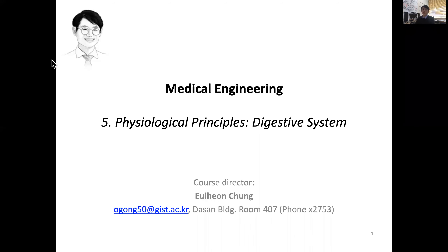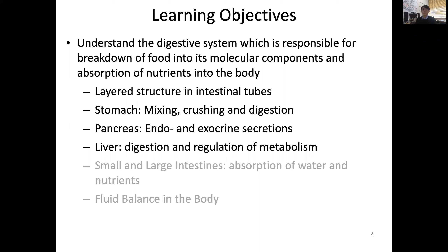Today we're going to discuss the digestive system as a physiological principle. The digestive system is responsible for breaking down food into its molecular components for use and absorption of nutrients into our body. We'll discuss the layered structure in the intestinal tract, stomach, pancreas, liver, small and large intestine, and fluid balance in the body.